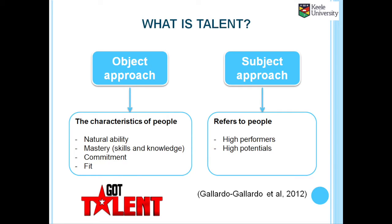Firstly, there is an object approach which refers to the characteristics of people. Within the object approach to talent, they further distinguish between approaches that conceptualize talent as natural abilities, mastering in skills and knowledge, commitment, and fit between the individual talent and organization context. Secondly, there is a subject approach which refers to talent as people — specifically high performers and high potential individuals, where management makes the decision of who is a talented individual.